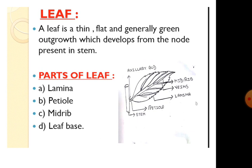Leaf. Now, a leaf is a thin, flat and generally green outgrowth which develops from the node present in the stem. A leaf has the following main parts. First is the lamina, which is also known as the leaf blade, and it is a flat, thin, green and broad part of the leaf.